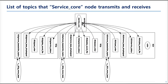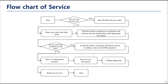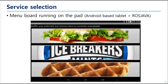This graph shows what kind of topics are published or subscribed to by the service core nodes. There are topics for TTS speech, service status, the order, and the goal pose of the robot. Check this later if you want to use it. This is the flowchart of the delivery system — you can check this later as well. And as mentioned, ROS can run in Android as well. This is the ROS Android application for the service menu, which runs almost the same as the ROS we have seen.